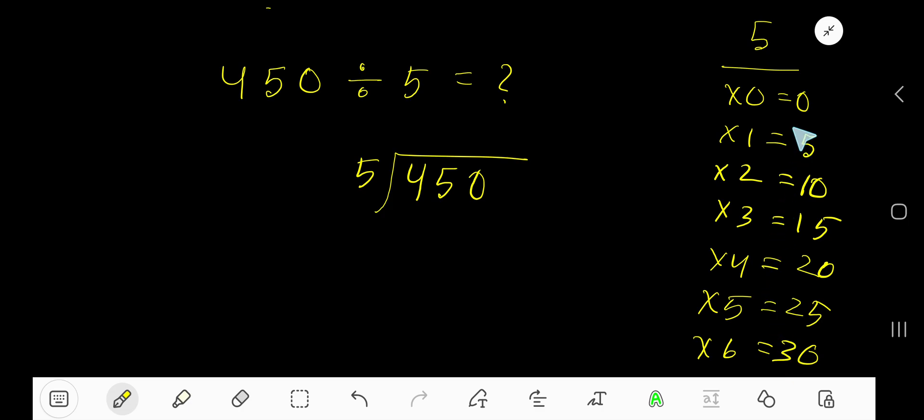5 times 6 is 30. To find the multiplication table of 5, just add 5 with the previous step: 0 plus 5 is 5, 5 plus 5 is 10, 10 plus 5 is 15, like this. So, 5 goes into 4 how many times?